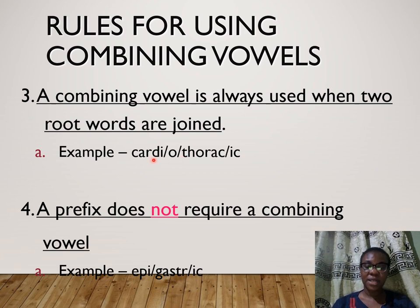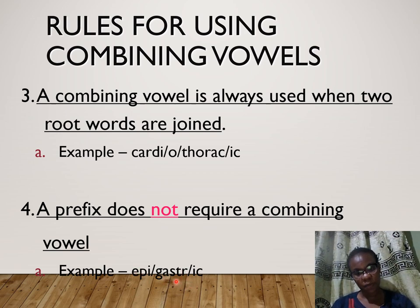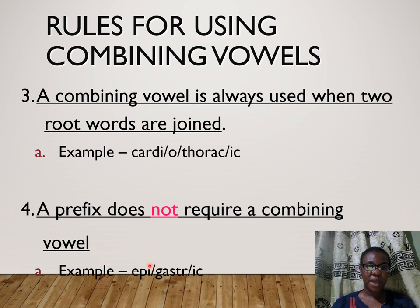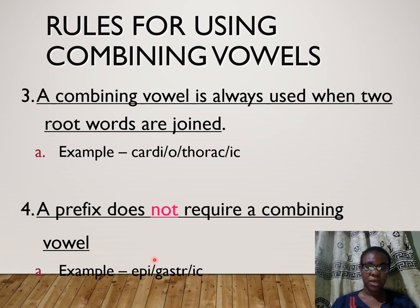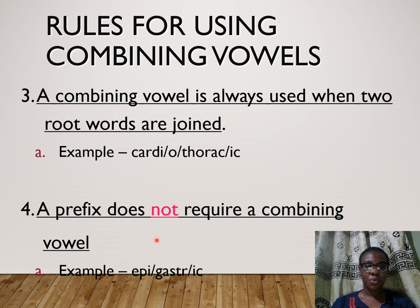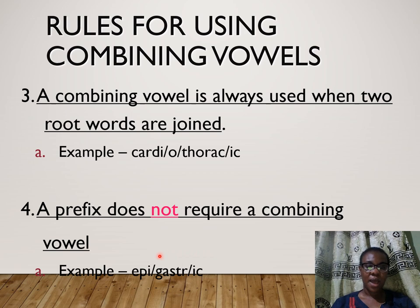A prefix does not require a combining vowel. 'Epi-' is the prefix, telling you something about the root word 'gastric' — 'epi-' means on top or above, 'gastric' means stomach, so 'epigastric' means on top of the stomach. There is no need for a combining vowel — you would not say 'epio-gastric'. Similarly, once you have a prefix like in 'anemia', you do not say 'ane-o-mia'. The prefix is 'an-', 'emia' is the part referring to the blood — so 'anemia' literally means no blood but refers to reduced blood levels.